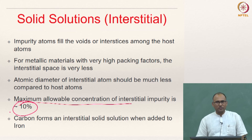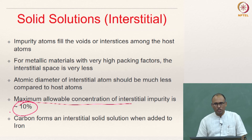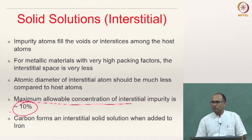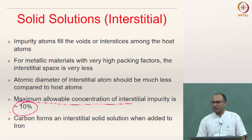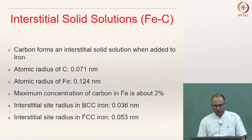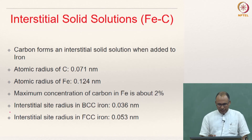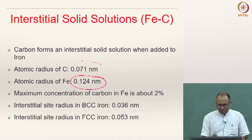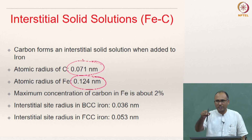Carbon forms an interstitial solid solution with iron — so steel is an interstitial solid solution of iron and carbon. The atomic radius of iron is 0.124 nm, while carbon is much smaller at 0.071 nm, which is why carbon can nicely sit in the interstitial locations of the iron lattice.